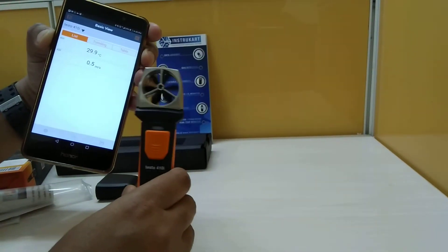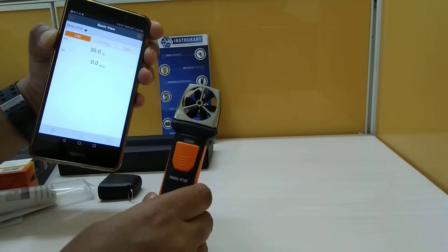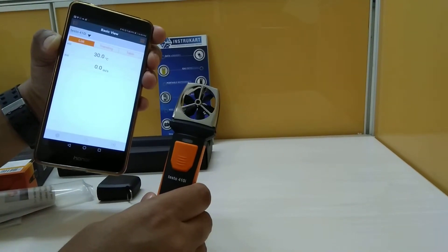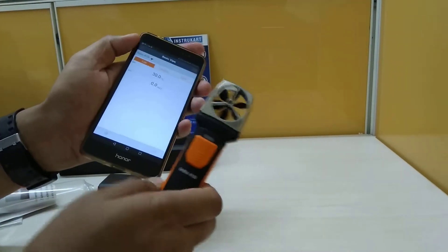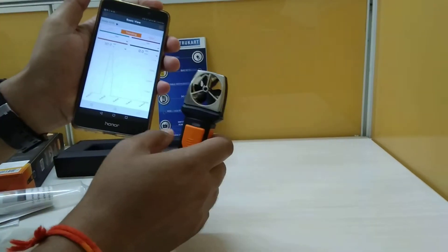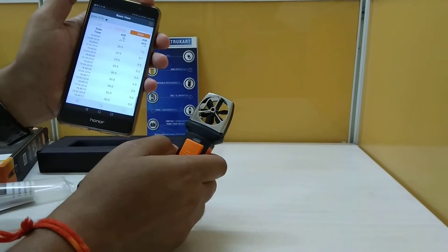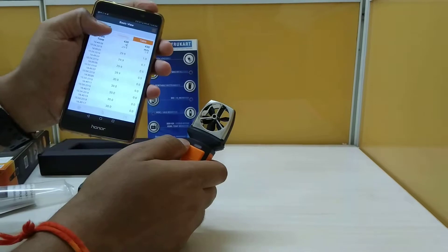This is possible with the app on your phone, which is downloadable from the Play Store. The app name is Testo Smart. It provides trending values and a table which refreshes every one second.